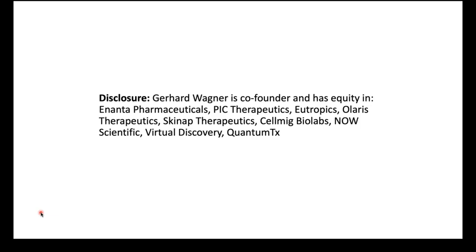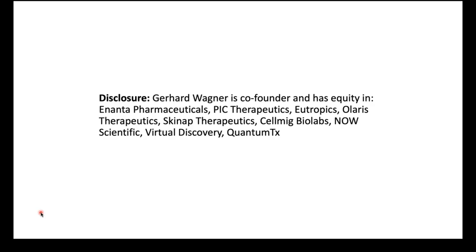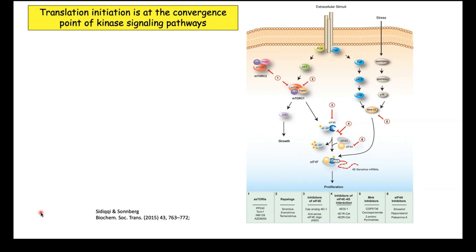I have to disclose that I'm involved in founding a number of companies, and a few are still relevant to what I'll be talking about here. This is about translation initiation and cancer. This is a slide I copied from Nahum Sonnenberg's lab — Siddiqui and Sonnenberg — showing that there are different signaling pathways related to cancer, with many inhibitors of parts of these pathways, and at the end they all come down on translation initiation, the process by which cells convince the ribosome to make proteins. Cancers are typically heterogeneous.